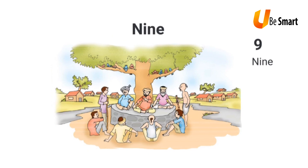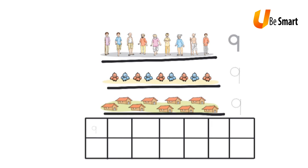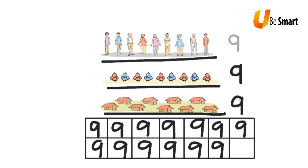In this picture, I see 1, 2, 3, 4, 5, 6, 7, 8, and 9 men. I also see 1, 2, 3, 4, 5, 6, 7, 8, and 9 houses. And there are 1, 2, 3, 4, 5, 6, 7, 8, and 9 birds. So I see 9 men, 9 birds, and 9 houses. I write the number 9 along these dotted lines like this, and I also write the number in each of the boxes below.